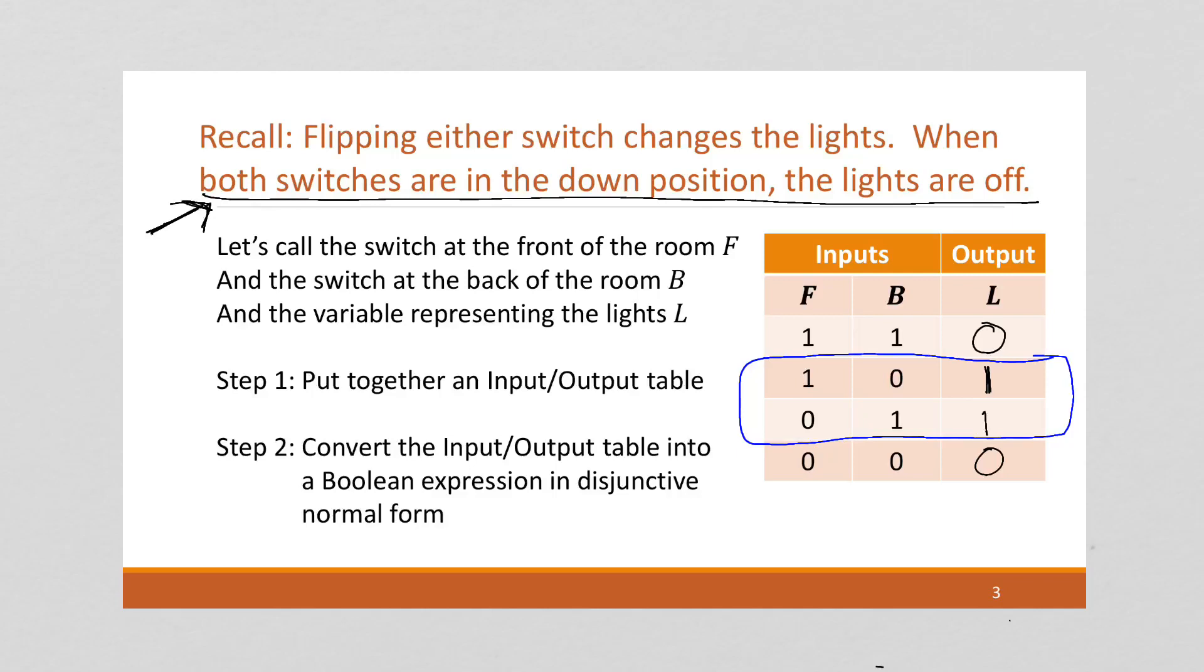figure out the equation for each of those rows and put them together into disjunctive normal form. So this first row, we're going to have, it's going to be true if F is true and B is false or off.